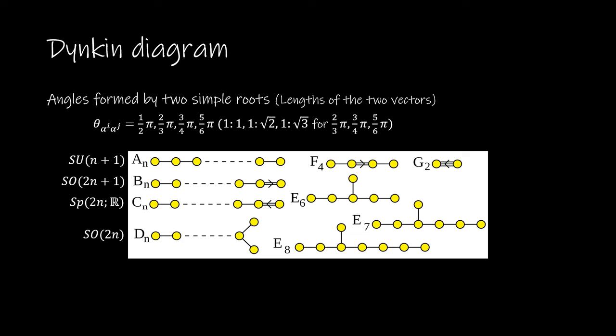The Dynkin diagram allows us to see the inner product relationship of simple roots, determine all the roots, and determine the commutation relationship, which is characteristic of the Lie algebra. A compact Lie group is identified as a consequence.